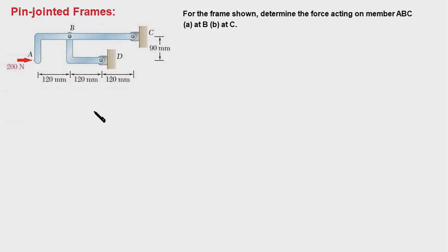In this problem, we have a frame which has two members, AC and BD. BD is a two-force member and ABC is a multi-force member, and we have to find the force acting on member ABC at point B and at C.